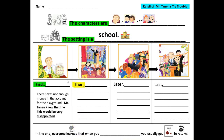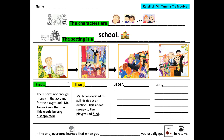Then, what happened? Mr. Tannen decided to sell his tie. Mr. Tannen felt a little sad after selling his ties at an auction. This added money to the playground fund.